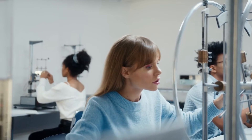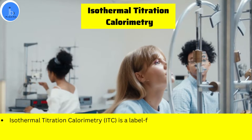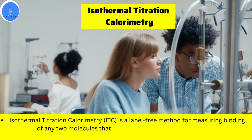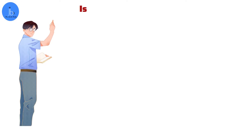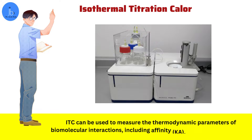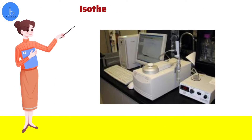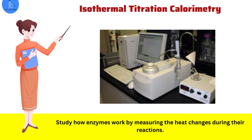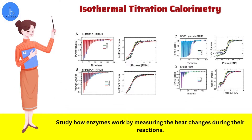Let's first try to understand what is isothermal titration calorimetry. It's a technique used in scientific research to understand how molecules interact with each other. It measures the heat changes that occur when molecules bind together — think of it like a molecular heat sensor. It allows scientists to determine how strong the interaction is between two molecules, like a protein and a small molecule. ITC can also help us to study how enzymes work by measuring the heat changes during their reaction, giving us insight into how fast enzymes bind to their substrate and convert it into product.